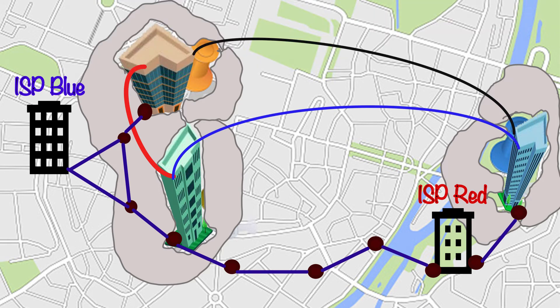That is how ABC Corporation connects all their branch offices in the same city as well as nearby different cities.